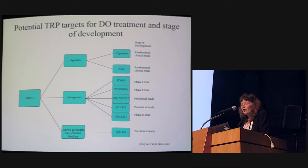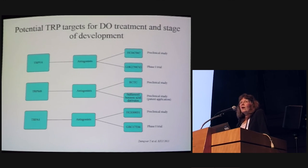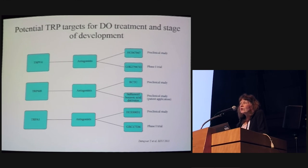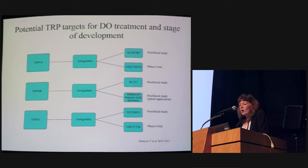There are also TRPV1-permeable sodium channel blockers now in preclinical trials. For the other TRP channels, TRPV4 antagonists — not agonists due to side effects — are in preclinical studies, and TRPA1 antagonists are in phase one trials. All of these are considered extremely promising.